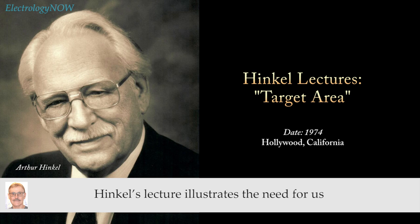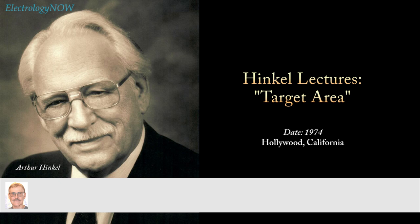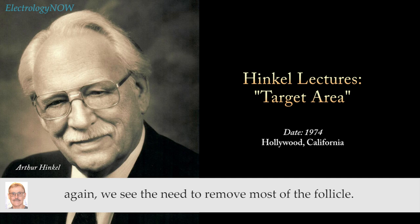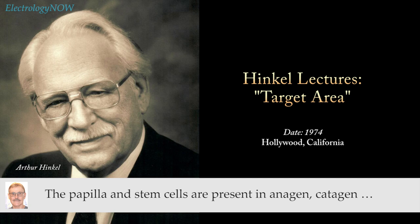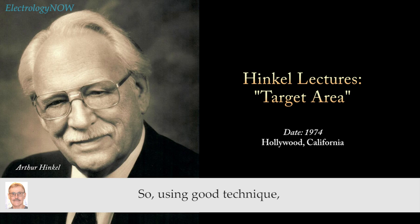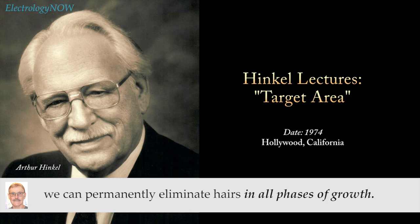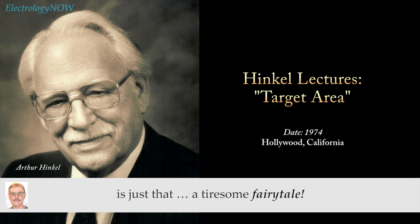Hinkle's lecture illustrates the need to remove most of the follicle — not just the papilla in anagen. Since the papilla is a moving target, we see the need to remove most of the follicle. By removing the lower two-thirds of the follicle, you'll be destroying the papilla whether active or dormant and wherever it may be located. The papilla and stem cells are present in anagen, catagen, and telogen. So using good technique, we can permanently eliminate hairs in all phases of growth. The persistent myth that only anagen hairs can be destroyed is just that — a tiresome fairy tale.